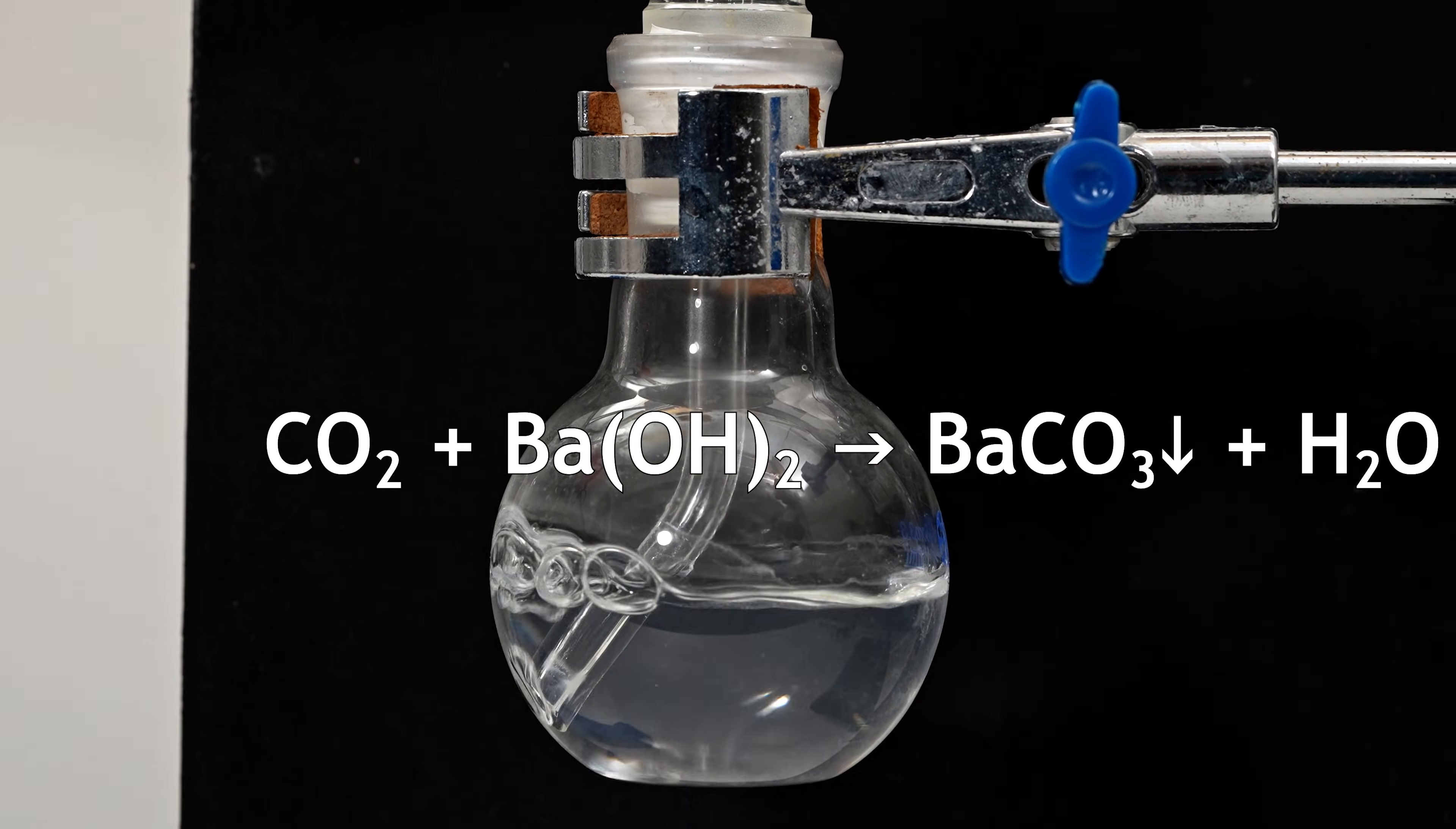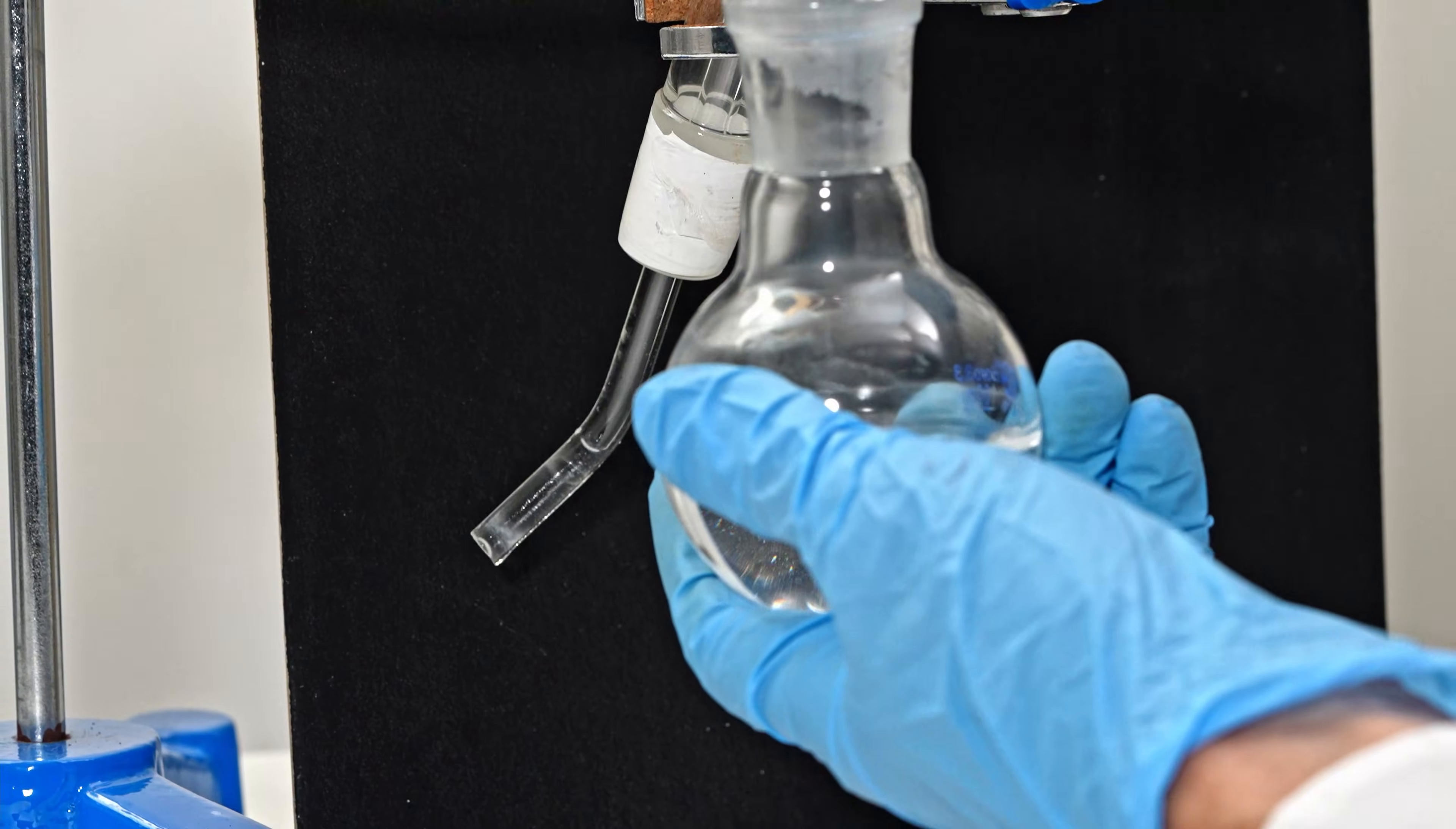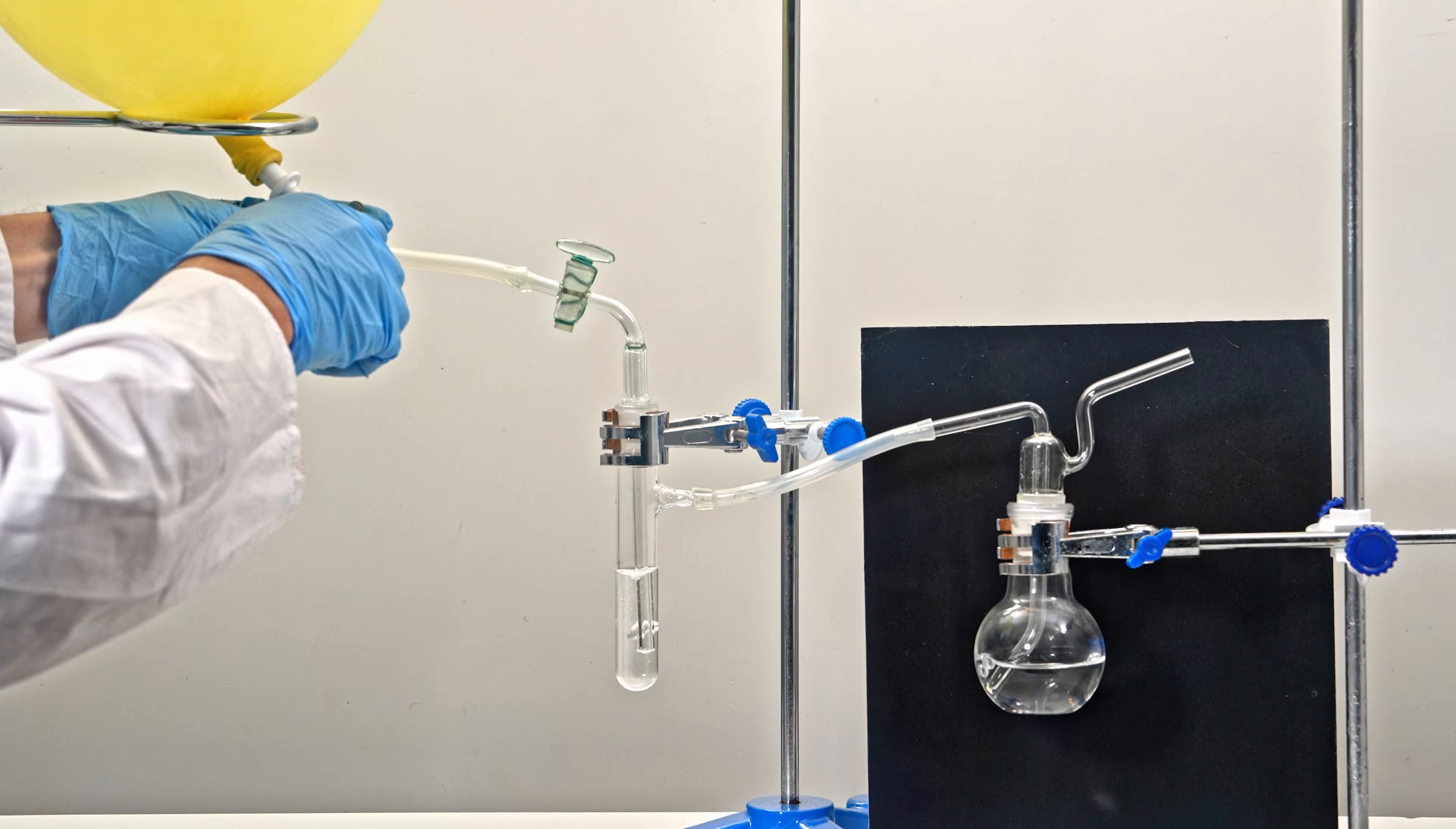After some time, the flask became cloudy, a clear sign that carbon dioxide had formed. But it's possible that this is barium fluoride precipitate, which is poorly soluble in water too. After all, it could be that the hydrogen fluoride, formed during the hydrolysis of xenon difluoride, reacted with the barium hydroxide.